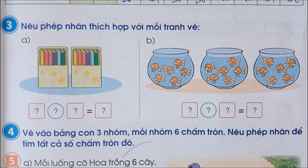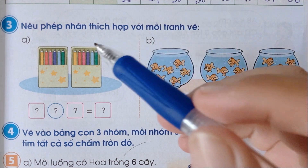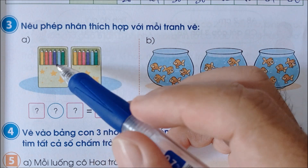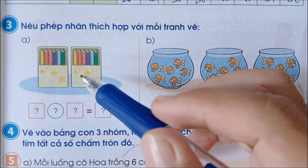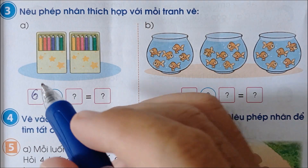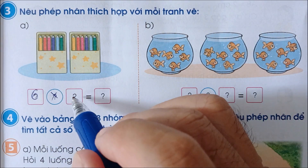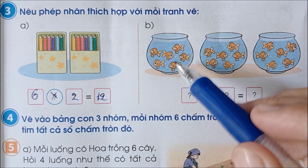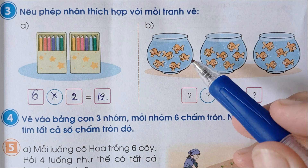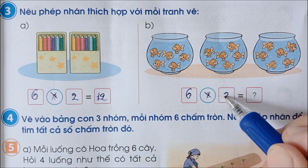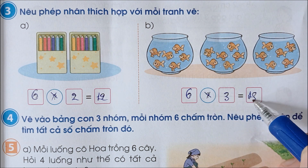Nêu phép nhân thích hợp với mỗi tranh vẽ. Mỗi một hộp bút có 6 cây bút, đây có 2 hộp bút, như vậy phép nhân là 6 x 2 bằng 12. Mỗi bình này có 6 con cá mà có 3 bình, như vậy 6 x 3 bằng 18.